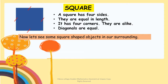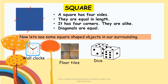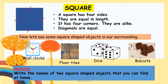Now, let's see some square-shaped objects that we can find in our surroundings: wall clocks, floor tiles, dice, and biscuits. Now, do the given activity — write the names of two square-shaped objects that you can find at your home.